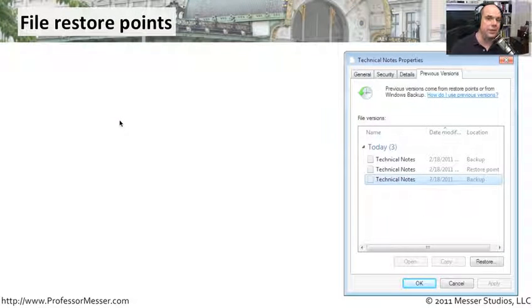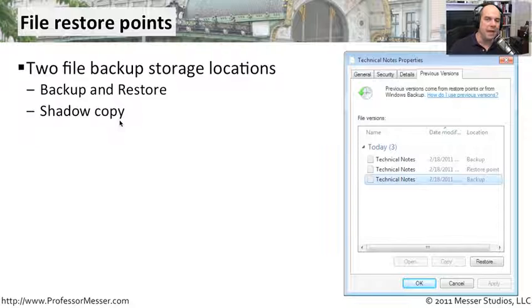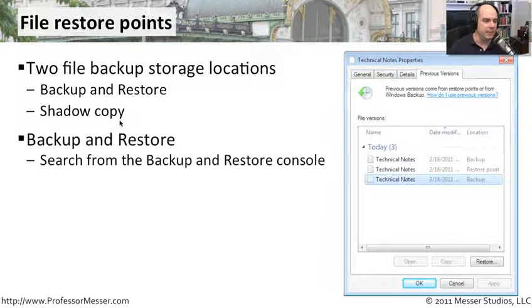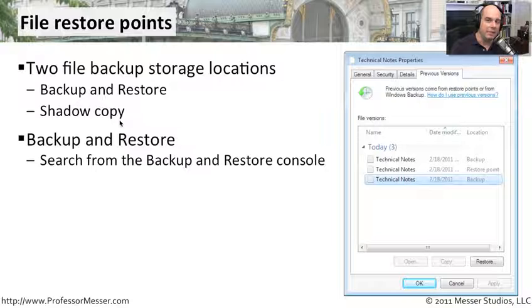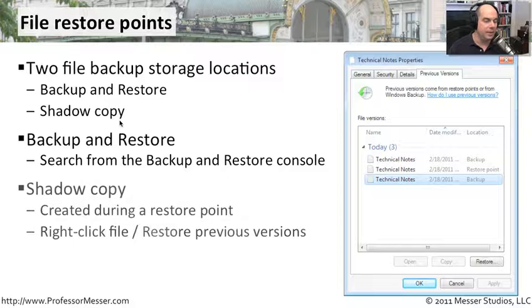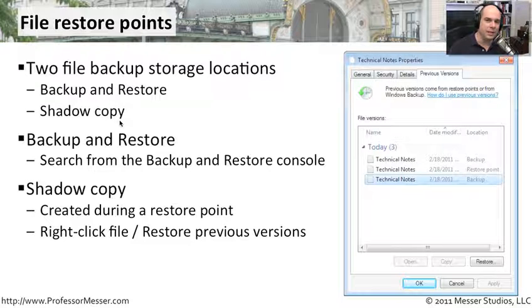There are two ways in Windows 7 that you can go about restoring a file. The first method is with Backup and Restore, and the second method is with something called a shadow copy. Backup and Restore is something we covered a couple of videos ago — we set up the Windows backup process, which backed up all our files and folders. You could even go to the backup folder and manually pull files out of the compressed zip files. The shadow copy is created when you create a restore point, either manually or automatically when you install an application or driver. If you right-click on a file and choose Restore Previous Versions, you'll see all the different versions available and how those versions were created.